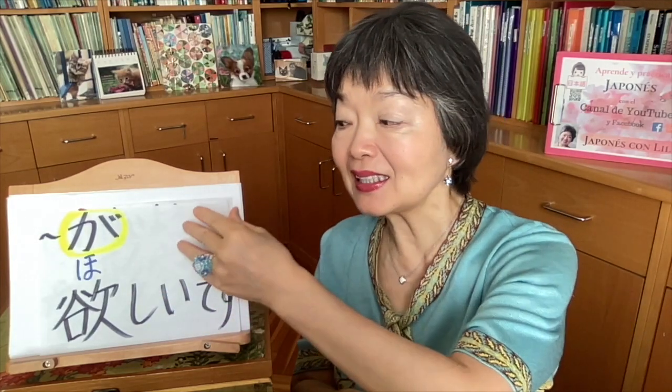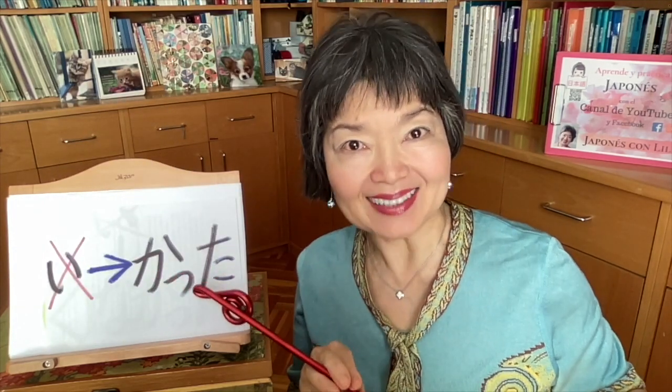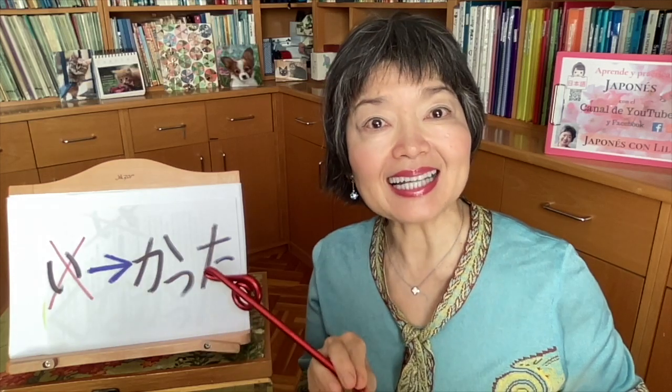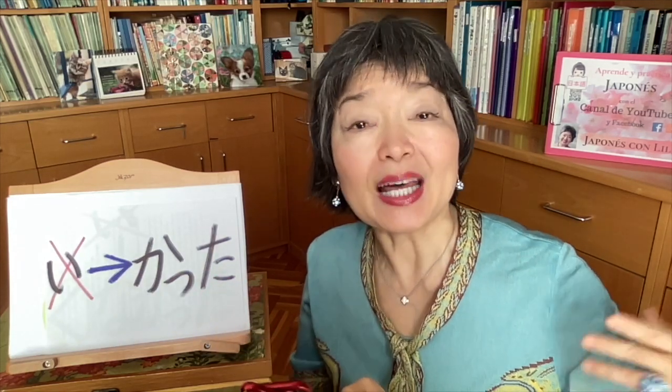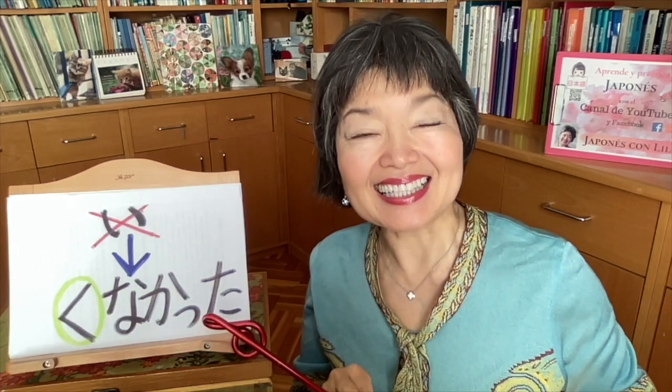In English, 'to want' is a verb, but in Japanese ほしいです (hoshii desu) you must think of it like an い-adjective (ii-keiyoshi). That means you change it like an い-adjective. For example: ほしくないです (hoshiku nai desu) means 'I don't want.' ほしかったです (hoshikatta desu) is the past tense 'I wanted.' And ほしくなかったです (hoshikunakatta desu) means 'I didn't want.'